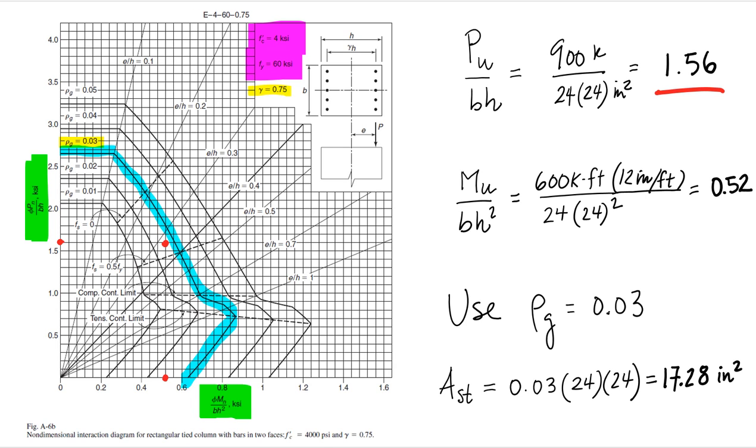And then if we divide MU divided by BH square, we get 0.52. And that's the dot that's shown in the horizontal axis. We connect those two and we find the coordinate on the graph.